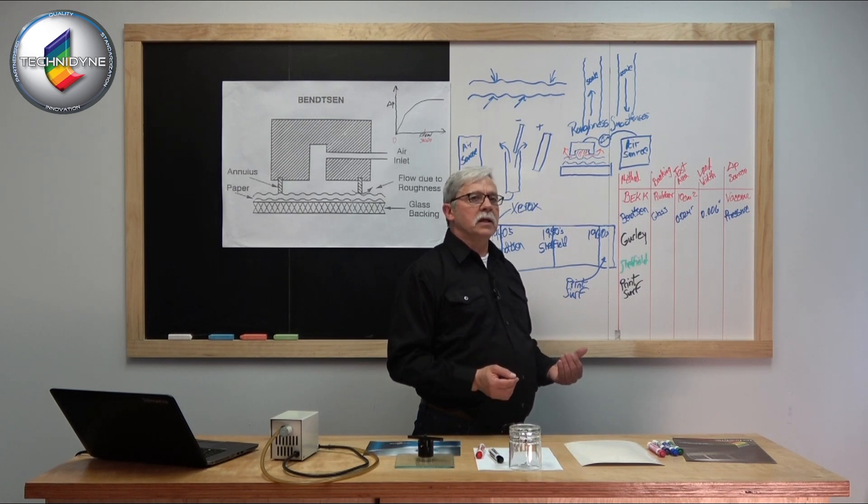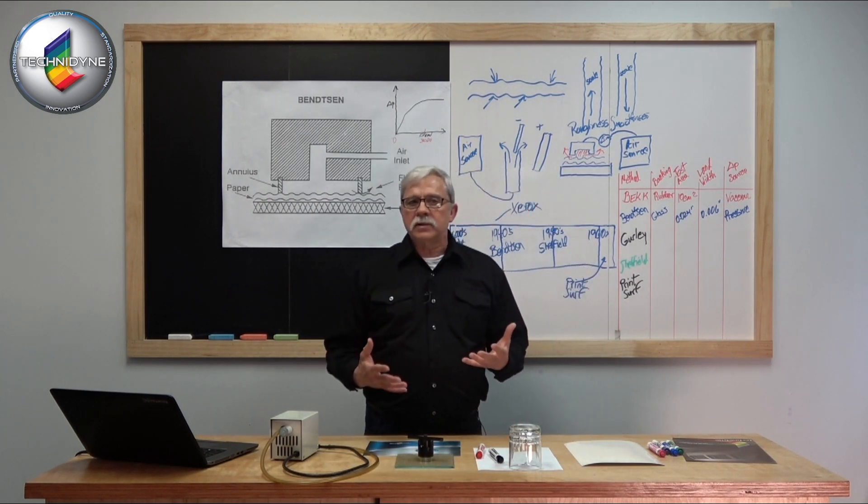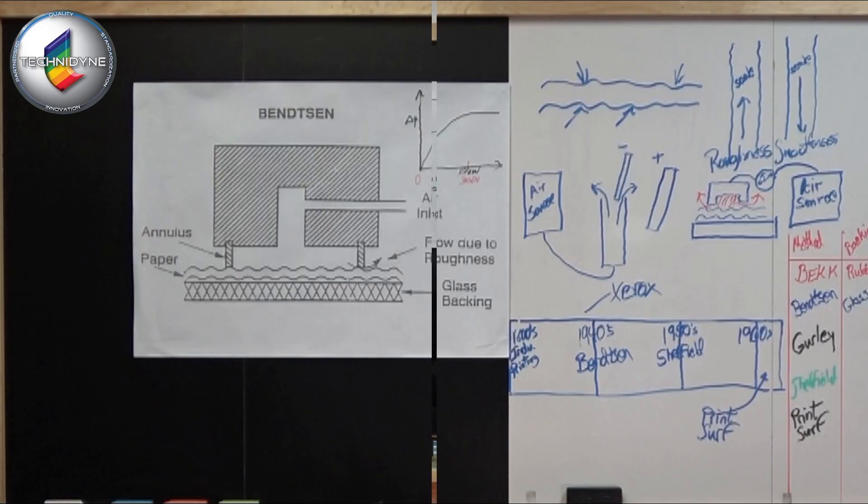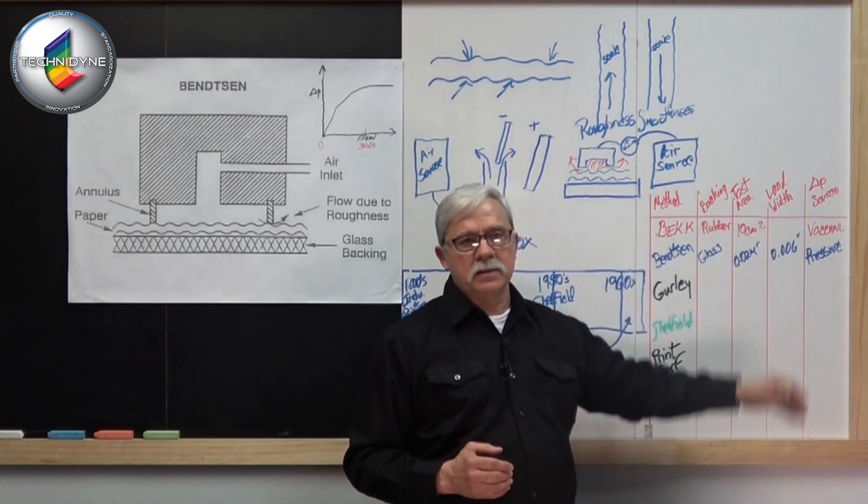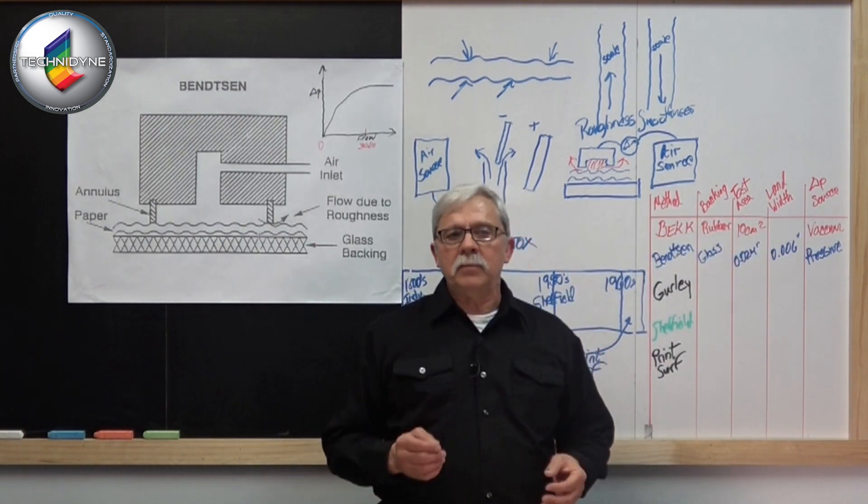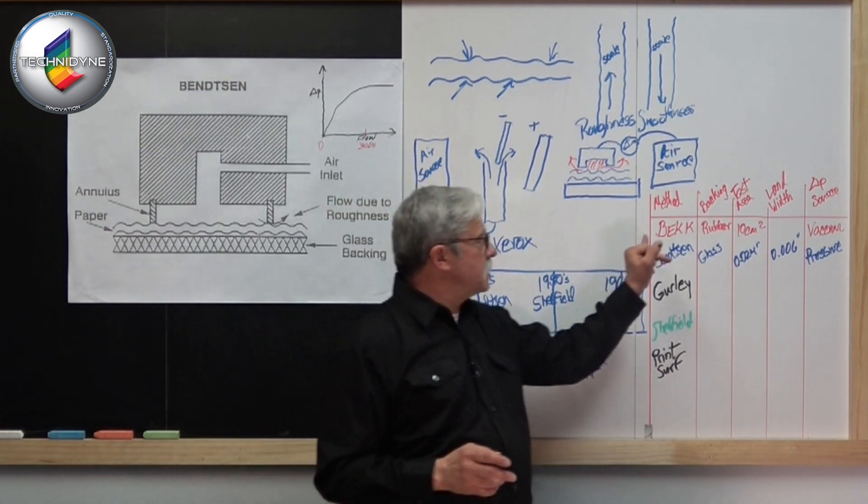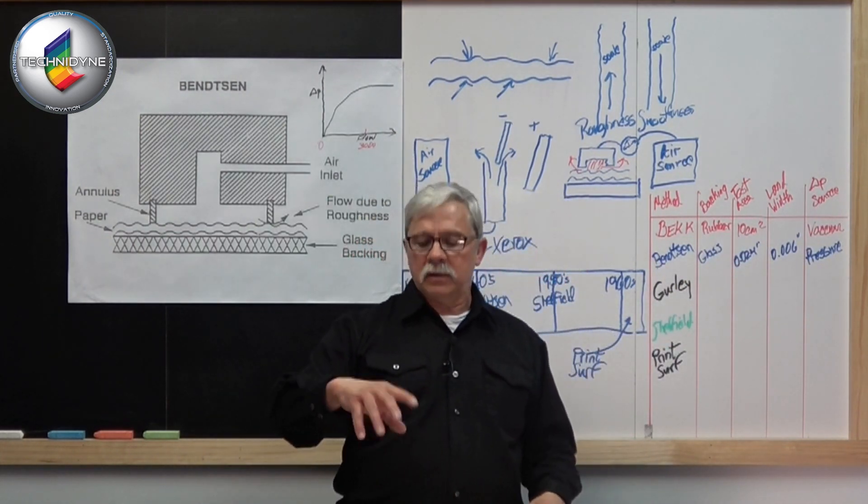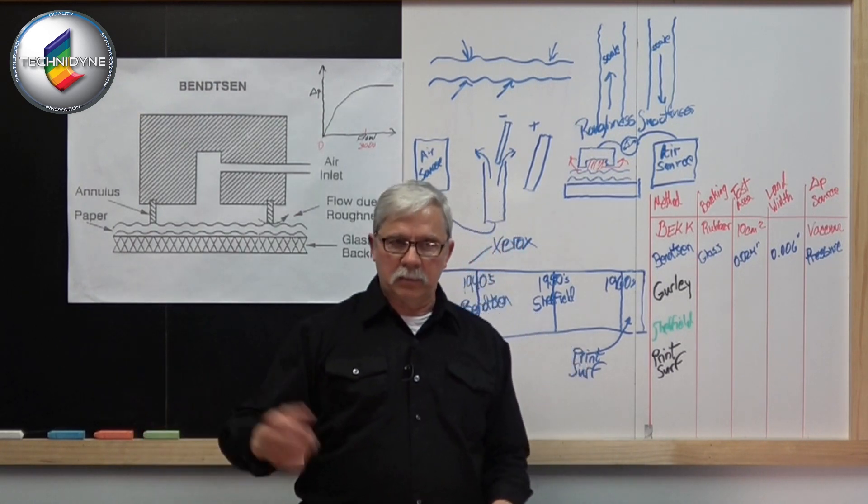I personally get asked quite often, if I have a Bendtsen number of 1500 milliliters per minute, what does that mean for instance in Beck? How many Beck seconds is that? Well, I might be able to come up with an approximate number, but you can see based on the parameters...